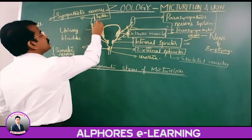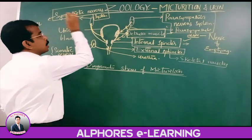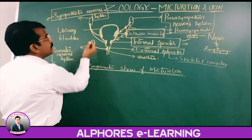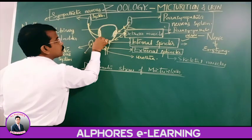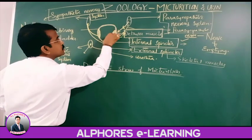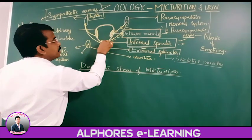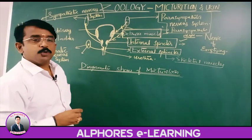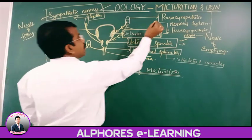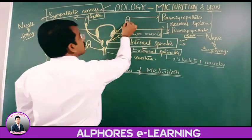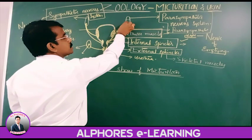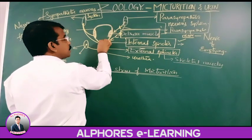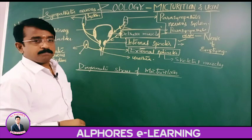The sympathetic nervous system, through its neurons, innervates into the detrusor muscles as well as the internal sphincter. The parasympathetic nervous system also innervates into the detrusor muscles as well as the internal sphincter.